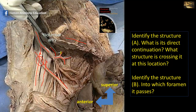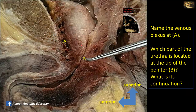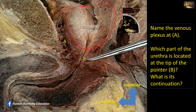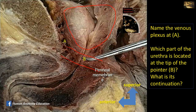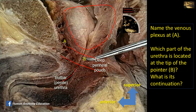Name the venous plexus at A. You can see the prostate gland with its base above and apex below. The venous plexus in close proximity to the prostate is the prostatic venous plexus. The part of the urethra passing through the prostate is the prostatic urethra. The apex of the prostate lies on the urogenital diaphragm, and these are the two fascial layers marking the deep perineal pouch. The urethra here is the membranous urethra located in the deep perineal pouch; its continuation is the bulbar or penile urethra.